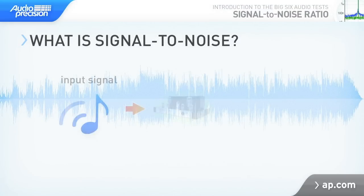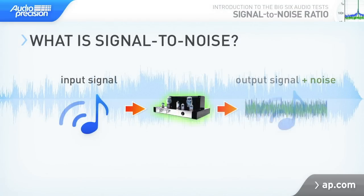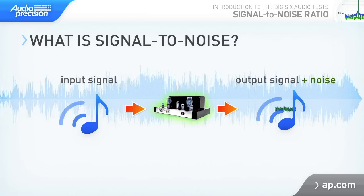Signal-to-noise ratio, or SNR, is a measurement that describes how much noise is in the output of a device in relation to the signal level. Every device has some amount of noise at its output. The question is, how much is too much? The answer is, it's all relative. A small amount of noise may not be objectionable if the output signal is very strong.